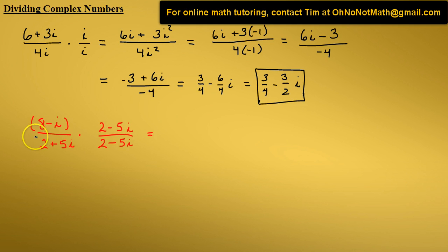We have a binomial in our numerators and denominators. Let's use FOIL to multiply these two binomials in the numerator. 8 times 2 is 16. 8 times negative 5i is negative 40i. Negative i times 2 is negative 2i.